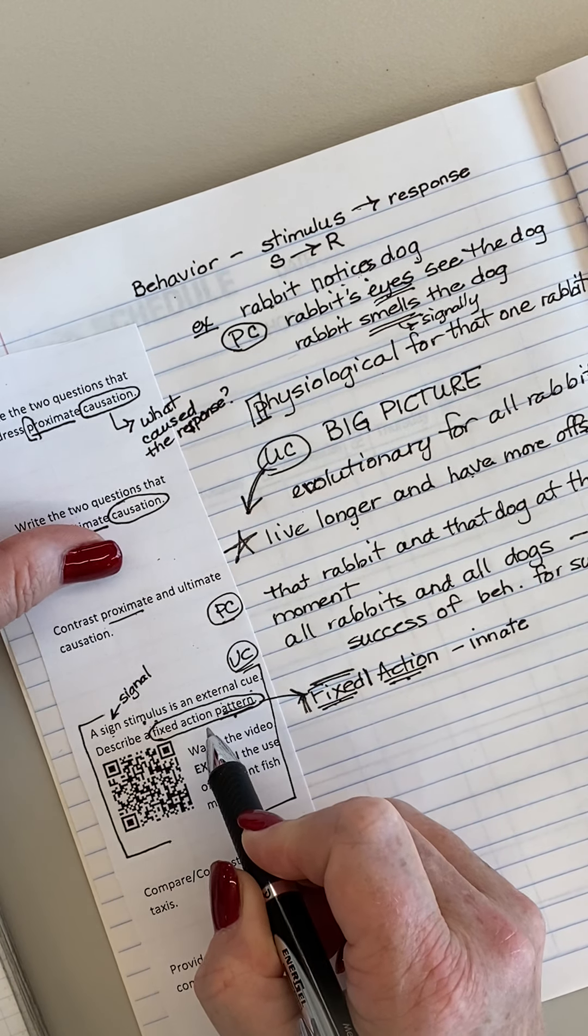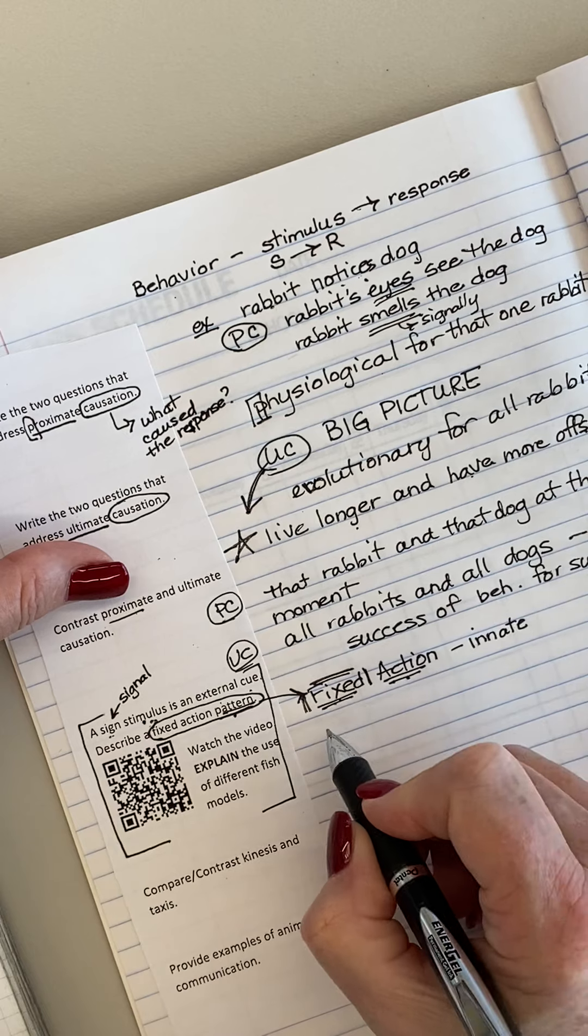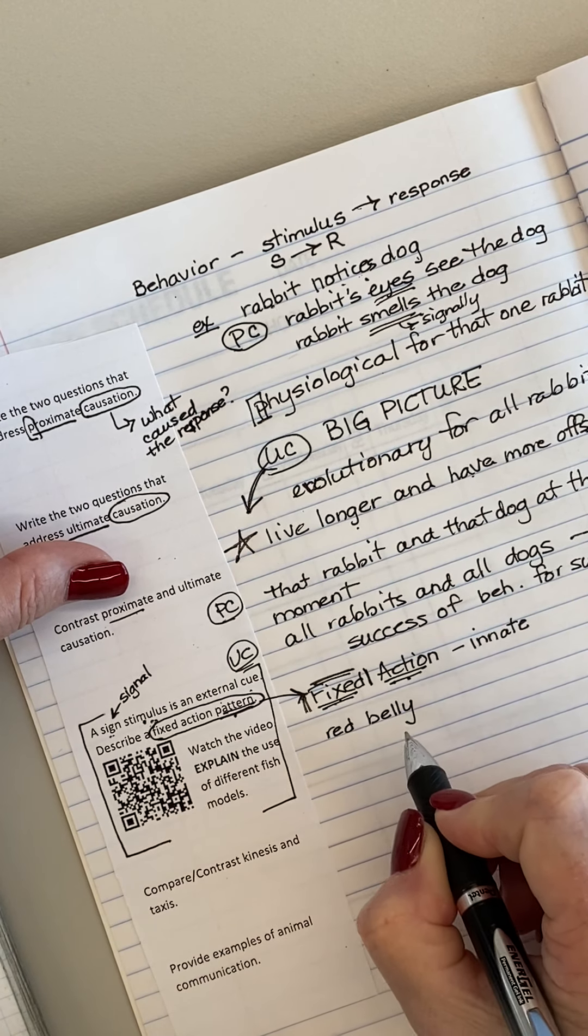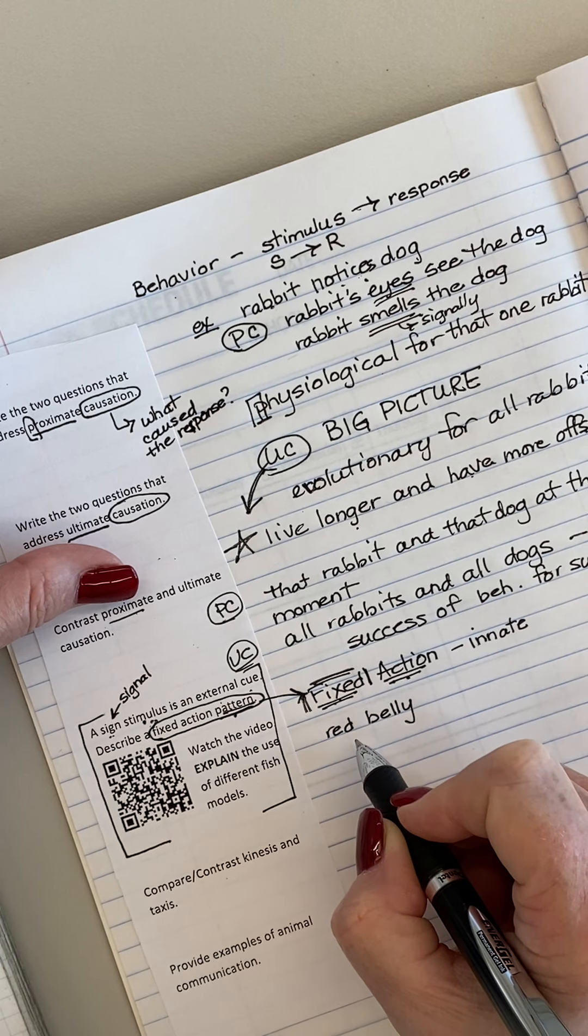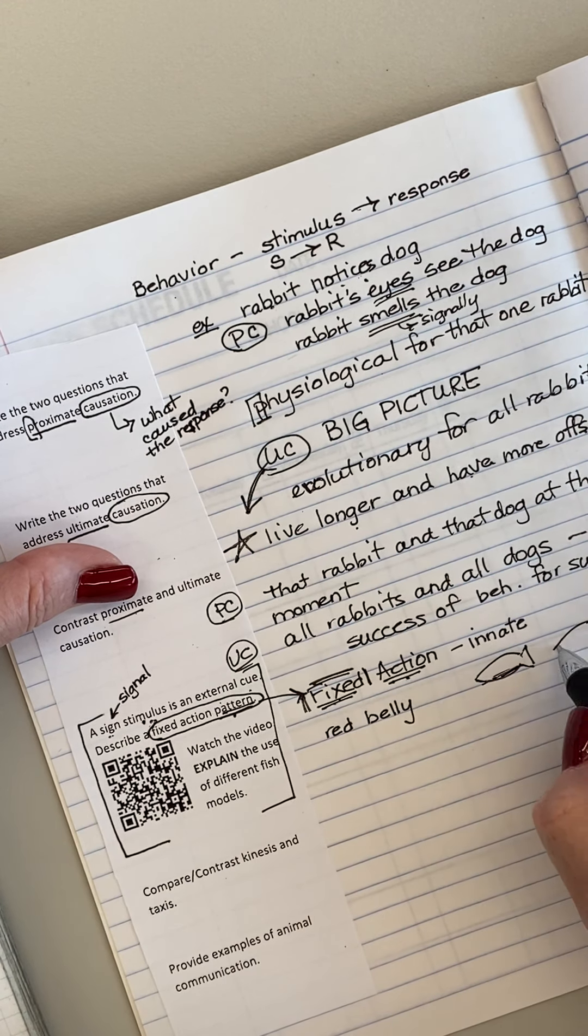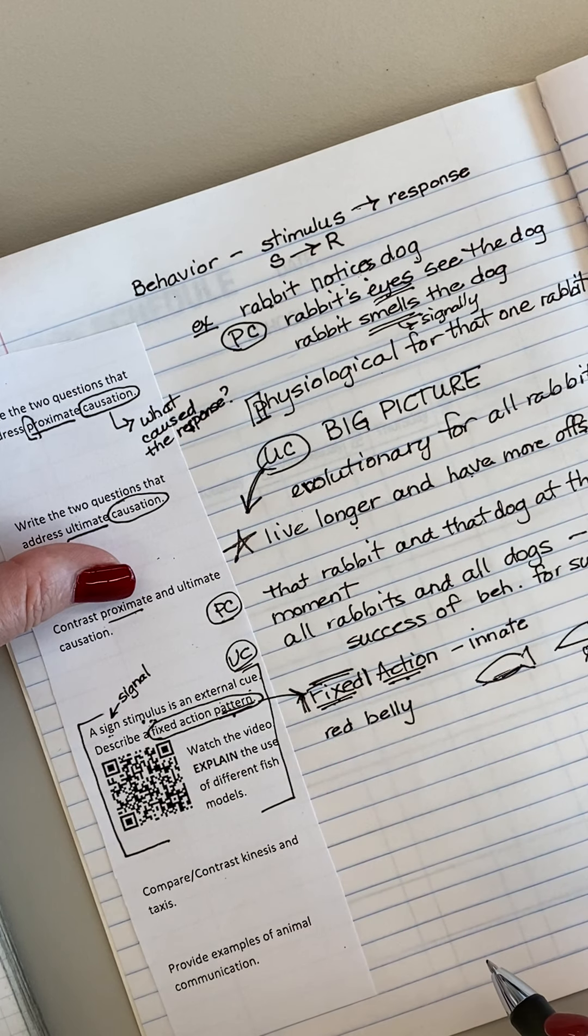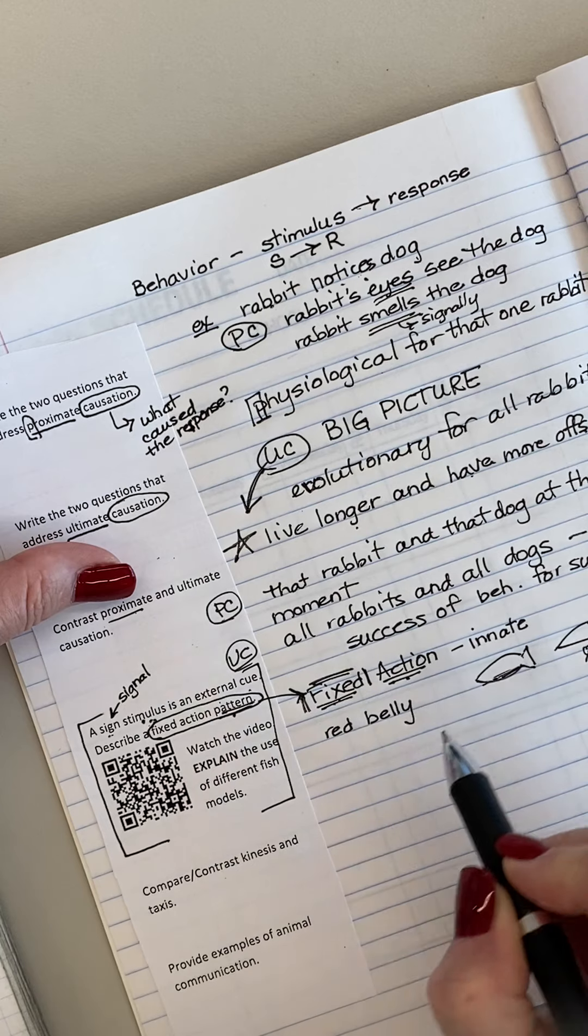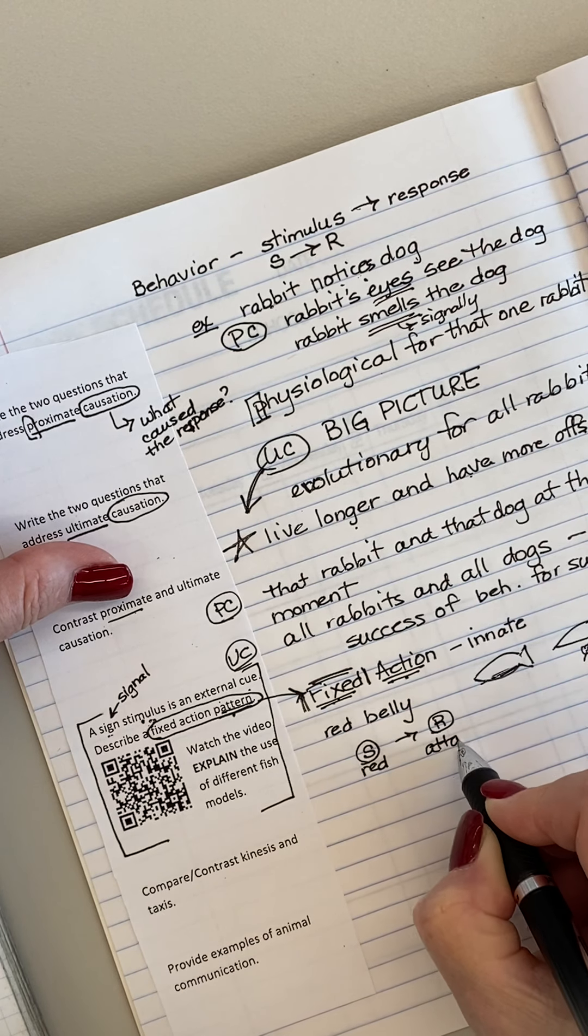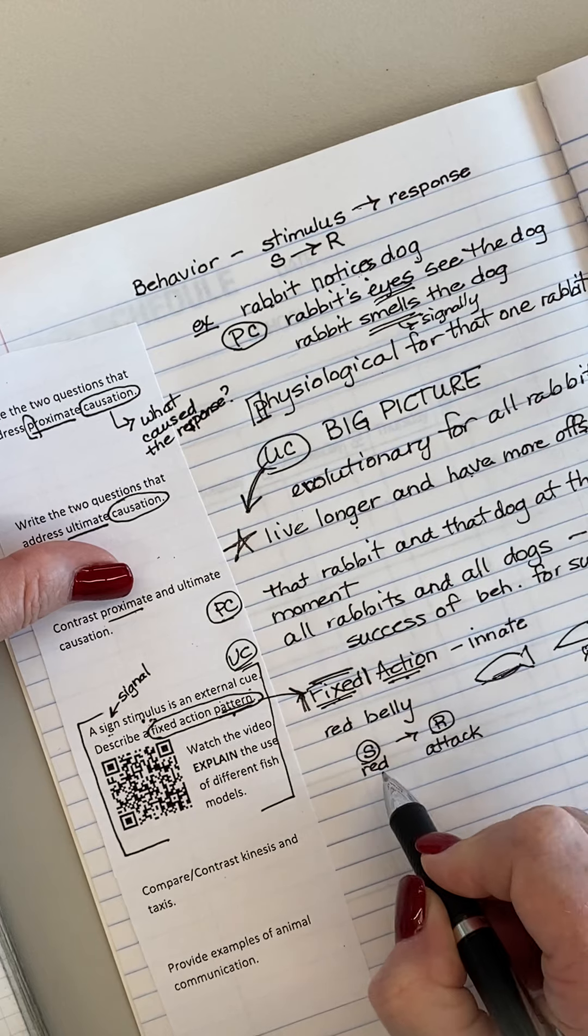So it's the same kind of thing with the fish. So in this particular case, that sign stimulus, which is an external cue, a fixed action pattern, is the red belly. So it's the red belly. And they did a really good job with making sure it was the red belly. So they had examples where they had little models that look like a fish that had the red belly. They used a fish without the red belly. They did some weird shaped things that were not fish, but had a red belly. And so in response to red, so here's the stimulus, red, the response is to attack. And so it wasn't the shape of the fish. They ruled that out. It was the red underbelly. Really, it's just red.